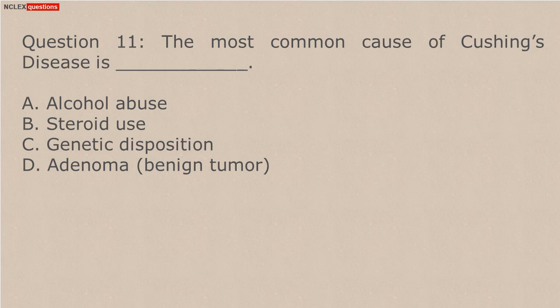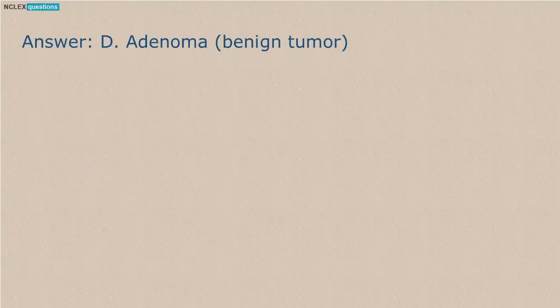Answer: A. Cushing's Syndrome originates in the pituitary gland. Answer: D. Adenoma/benign tumor.